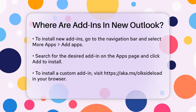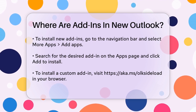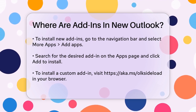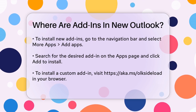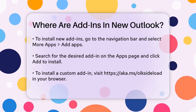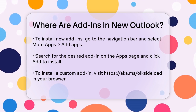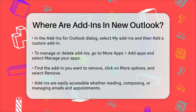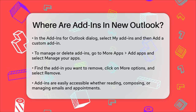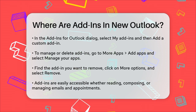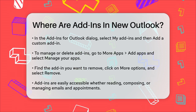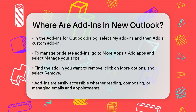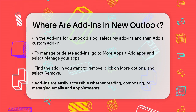If you need to install a custom add-in from a file, you'll need to go to the Add-ins for Outlook dialog. Open your preferred browser and navigate to the Add-ins for Outlook page, which will load the dialog after a few seconds. Select My Add-ins, then choose Add a custom add-in and select Add from file. Upload the XML file for the add-in and click Open to install it.